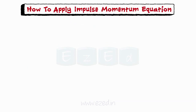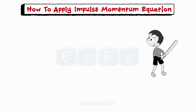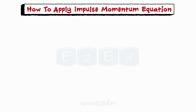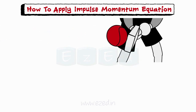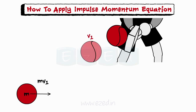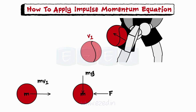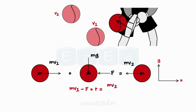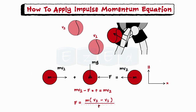How to apply an impulse momentum equation? Consider a cricket ball that strikes the bat at velocity V1 and is hit back by the batsman with velocity V2. The ball was in contact with the bat for time T. Step 1: show the initial momentum vector on the left-hand side, i.e. the ball moving with velocity V1. Step 2: in the center, show the forces acting on it, i.e. weight of the ball and force with which the ball was hit. Step 3: on the right-hand side, show the final momentum, i.e. the ball moving with velocity V2. Applying the impulse momentum equation, by knowing the initial velocity, final velocity, mass, and time, the force can be found out.